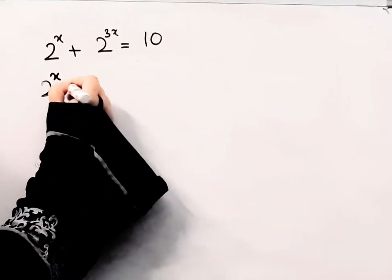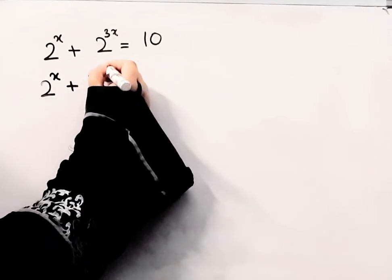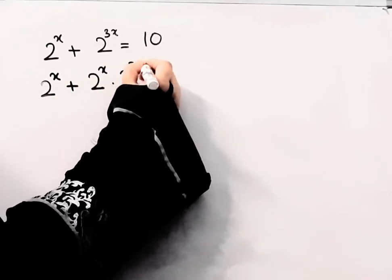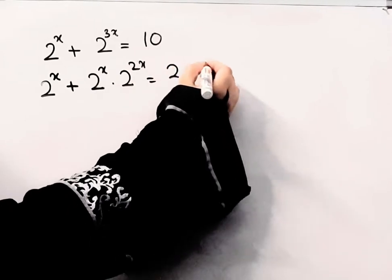We can write this as 2 to the power x plus 2 to the power x into 2 to the power 2x. This 10 can be written as 2 into 5.